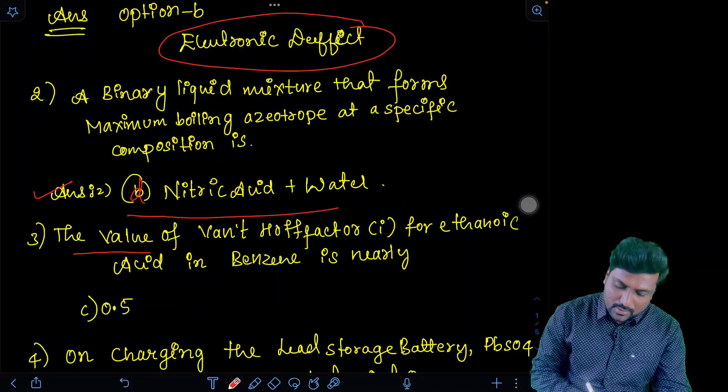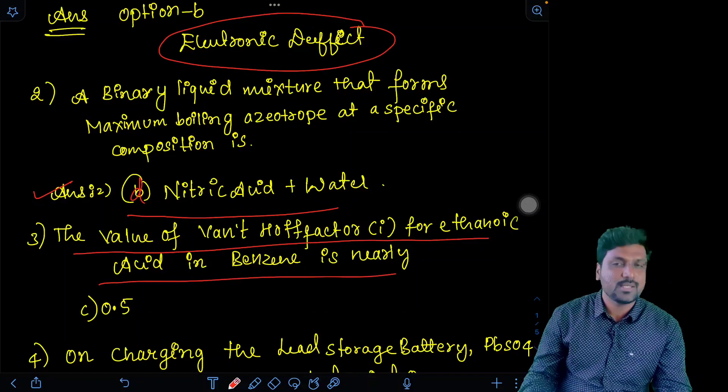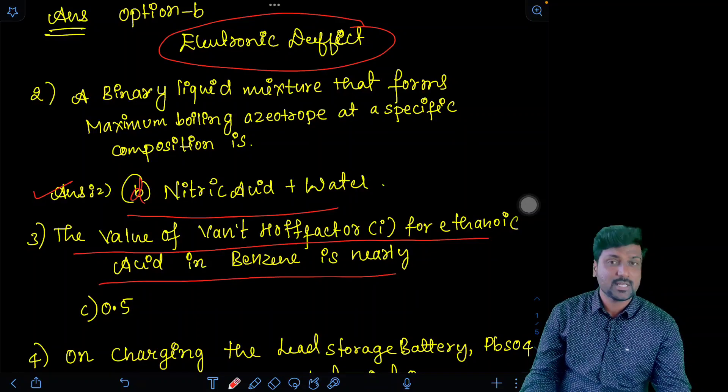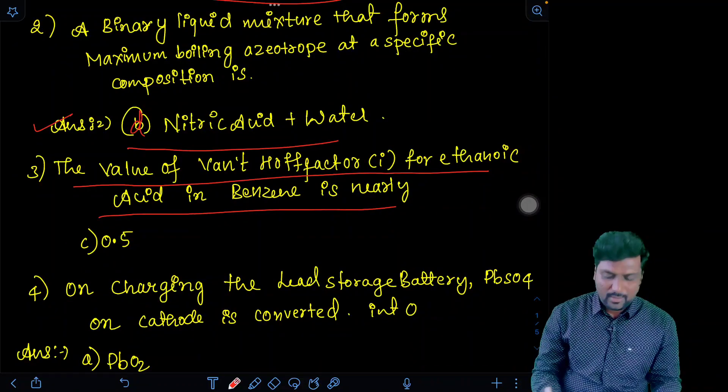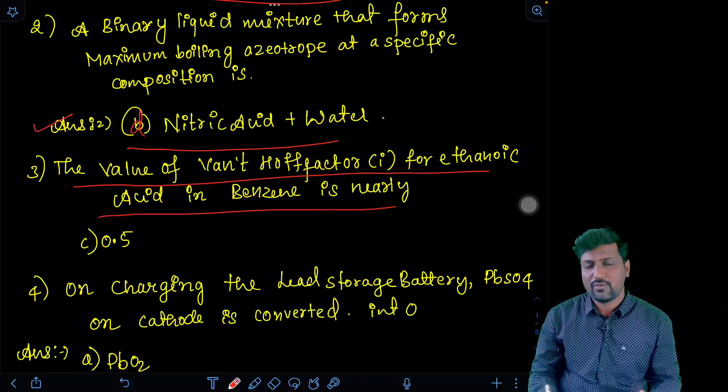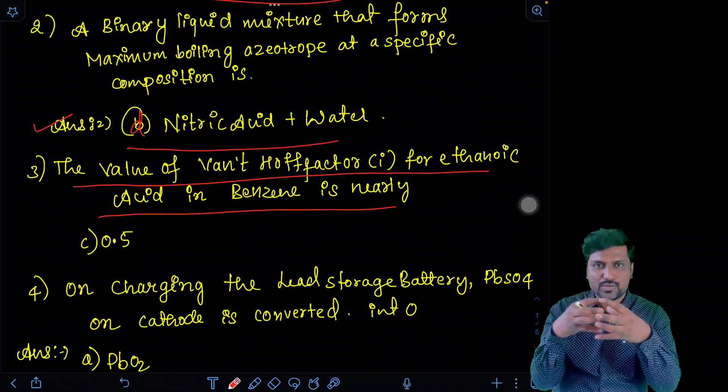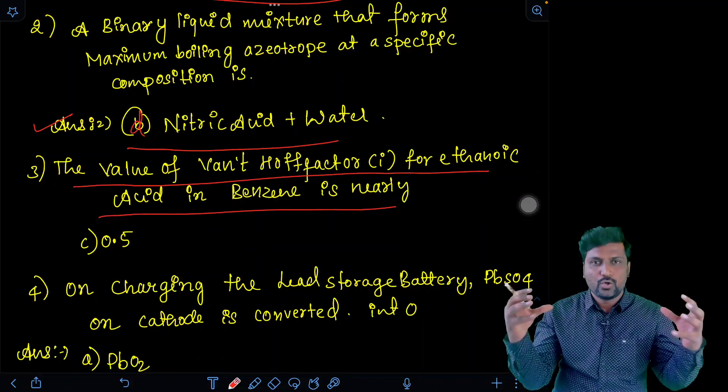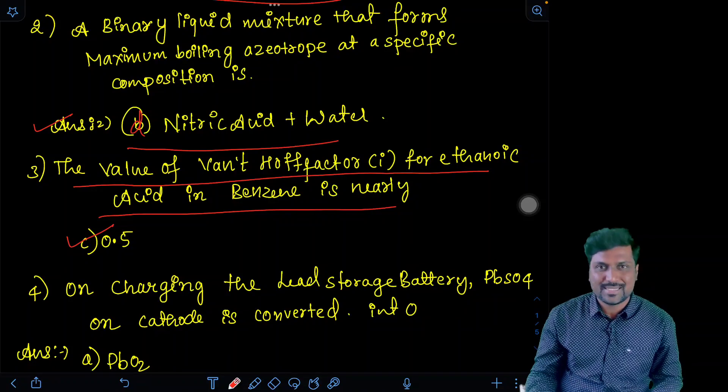Next, the next question is the value of Van't Hoff factor i for ethanoic acid in benzene is nearly. This was solution chapter. Solution chapter last part, Van't Hoff factor. Ethanoic acid, benzene, aprotic solvent. The ethanoic acid dimerizes, undergoes association. And two molecules become one. One by two. Answer is 0.5. That is C.